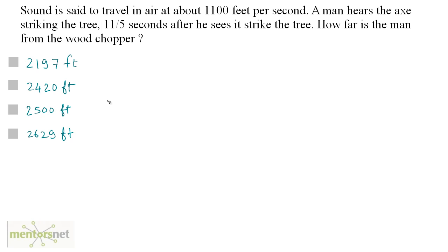Sound is set to travel in air at about 1100 feet per second. A man hears the axe striking the tree 11 by 5 seconds after he sees it strike the tree. How far is the man from the wood chopper? Well, this is a pretty straightforward question. You have been given the speed of sound, which is 1100 feet per second, and you have been given the time it takes for the sound to reach you.